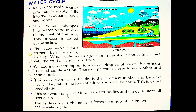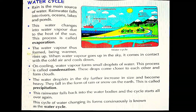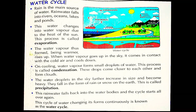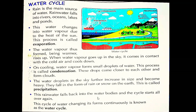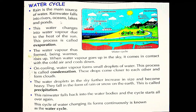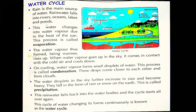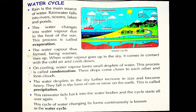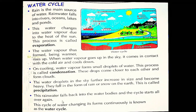This rain water falls back into the water bodies and the cycle starts all over again. Aur fir ye jo baarish ka paani hota hai, fir se paani ke jo hamare sources hain — rivers, oceans, lakes and ponds — inme jaake ye paani ki bunde baarish ki tarah gir jaati hain. And the cycle starts all over again.